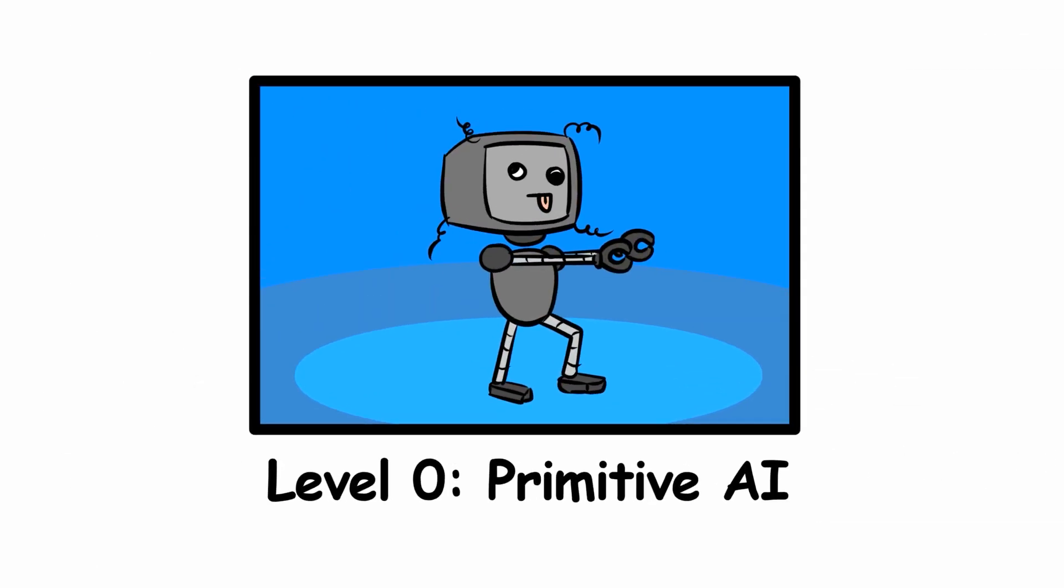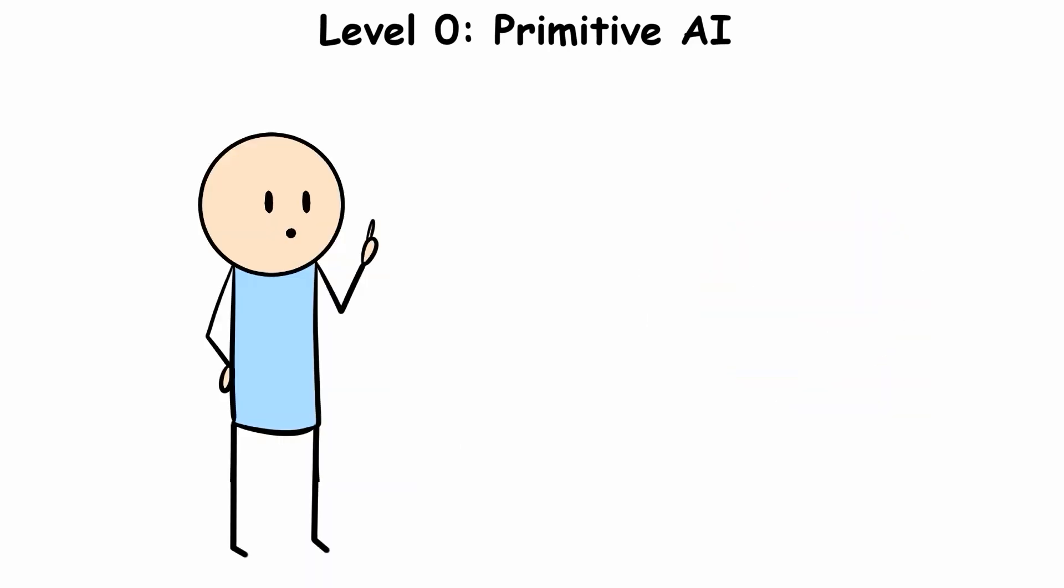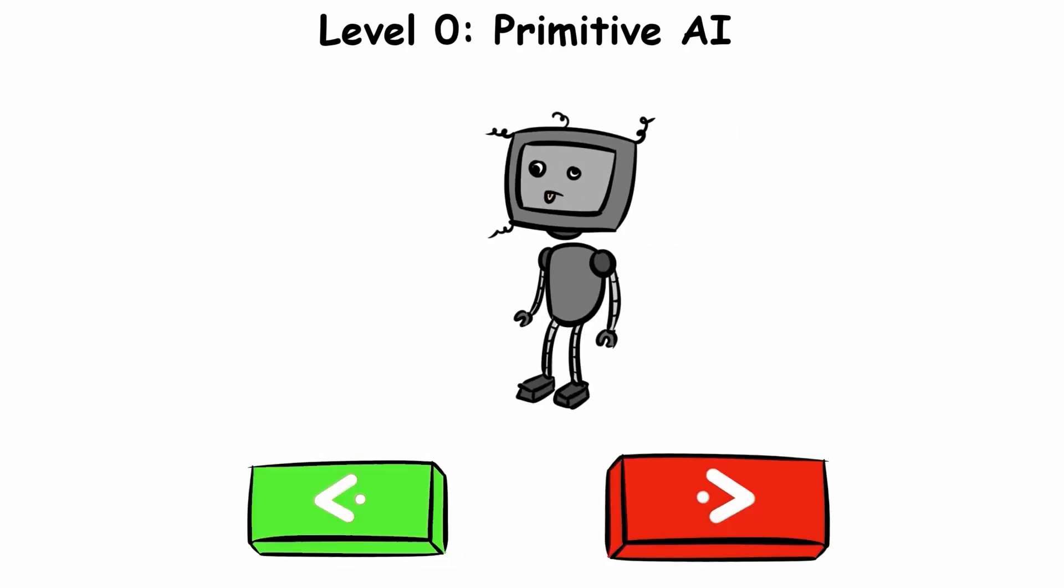Level 0, Primitive AI. Alright, picture this. No fancy algorithms, no learning ability, just pure mechanical logic. Primitive AI doesn't think or learn, just dumbly follows step-by-step commands.